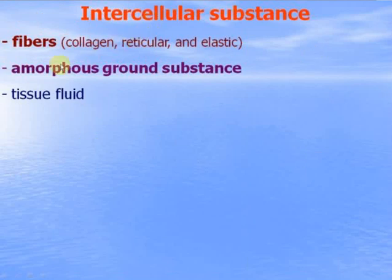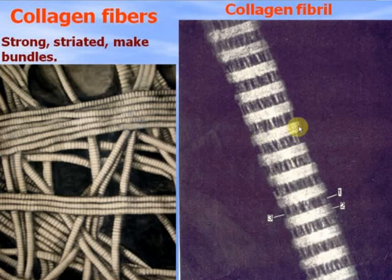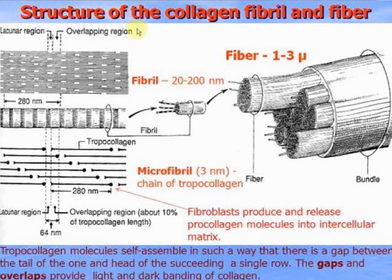Intercellular substance consists of fibers — collagen, reticular, elastic — and amorphous ground substance and tissue fluid. Collagen fibers are strong, form strands, and make bundles. Under the electron microscope, one collagen fibril shows light and dark bands, and protofibrils or microfibrils are visible inside the structure of the collagen fibril.